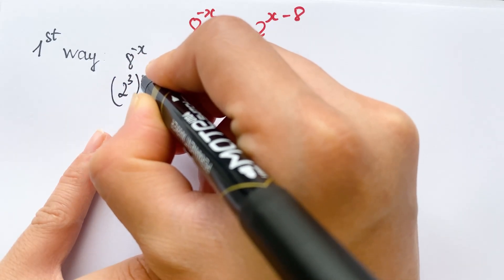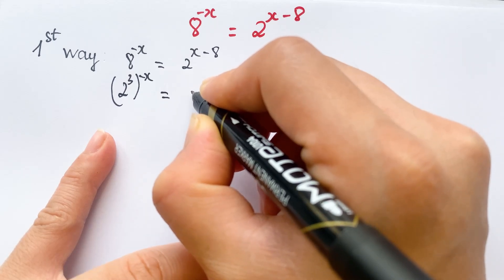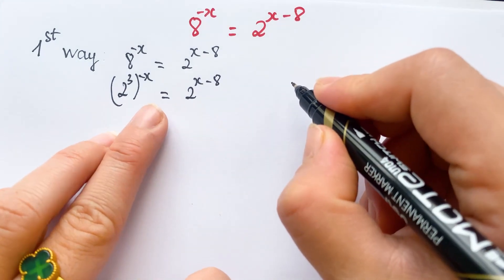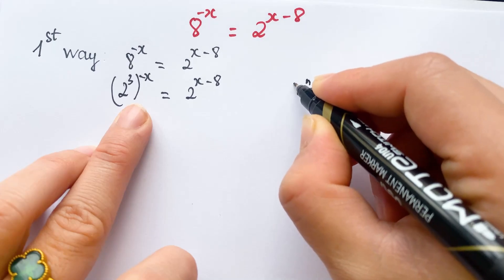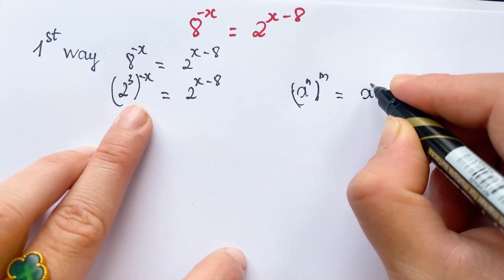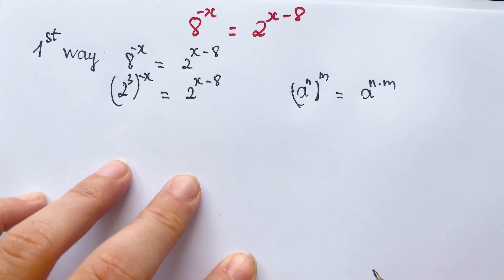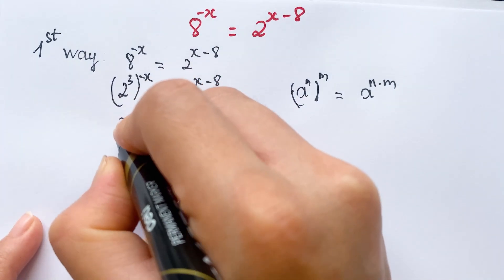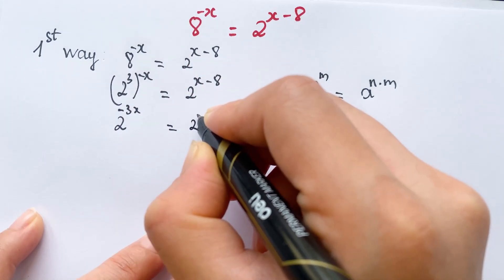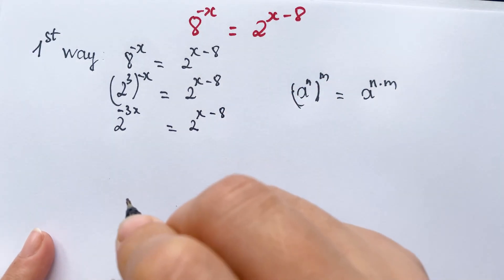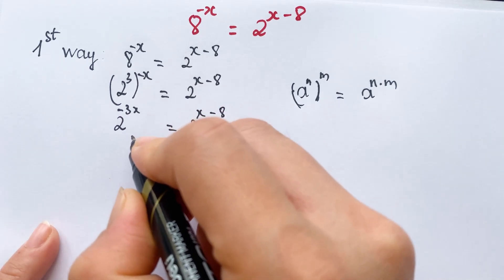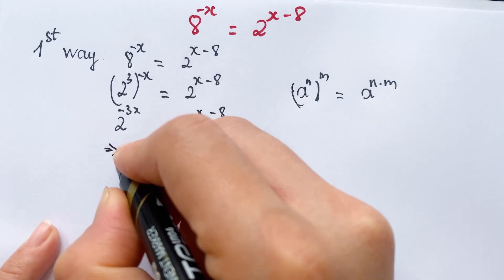You need to use the exponential rule: a power n whole power m equals a power n times m. Therefore you have 2 power minus 3x equals 2 power x minus 8. Everyone can see on the right hand side and the left hand side we have the same base, therefore the powers are equal.